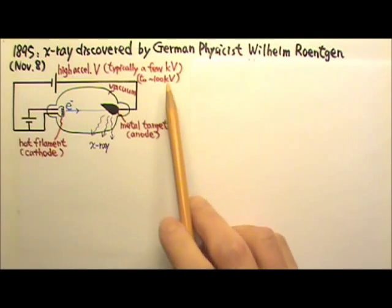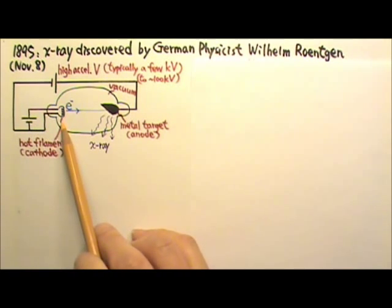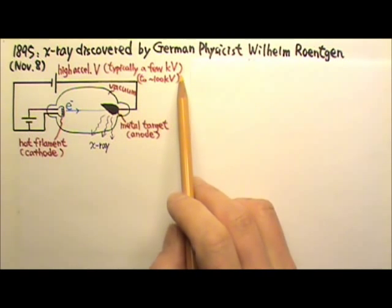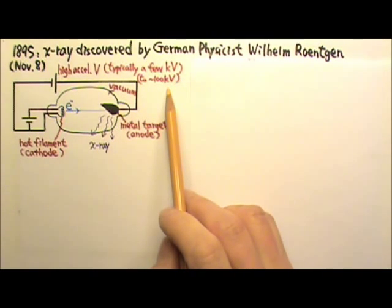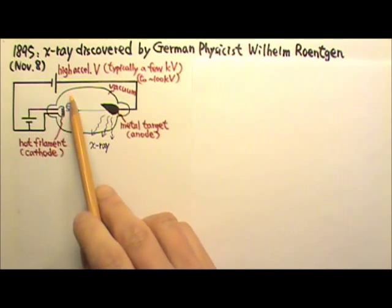A basic X-ray tube is like this. This voltage is used to heat up the filament. And that voltage, usually a few kV to about 100 kV high, is used to accelerate electrons from the hot filament cathode.